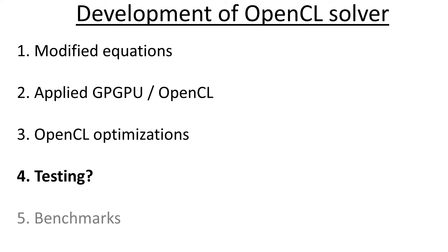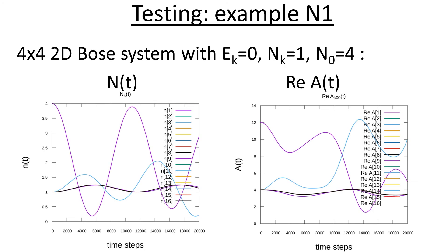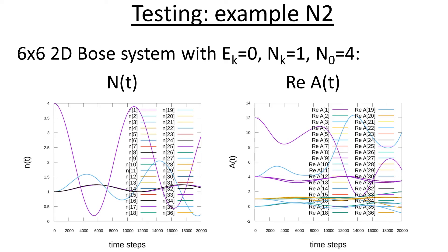The next steps are testing of our simulation program and benchmarks. Here we show the time behavior of some example system — two-dimensional, lattice size four by four. The graphs show N, the occupation of quantum states, and the real part of A, the two-particle correlator. We see that the graphs show some oscillations, and we can say that the program is stable. This is similar calculations for a larger system, six by six. Again, these two pictures show that the program is stable.